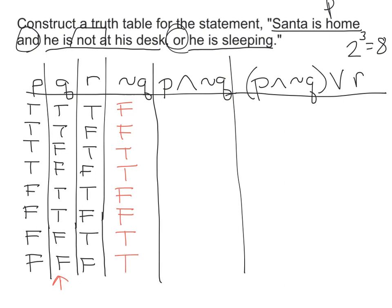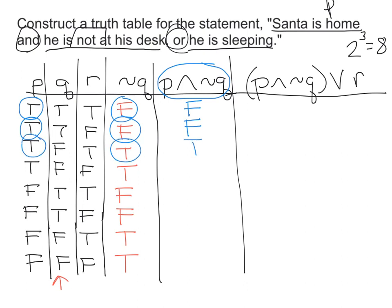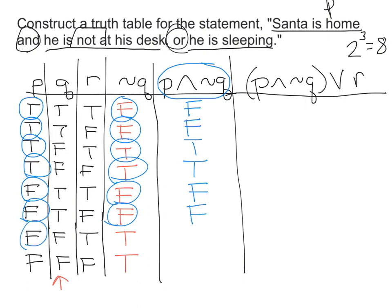Then I need to do the conjunction P and not Q. Going row by row: true and false is false; true and false is false; true and true is true; true and true is true; false and false is false; false and false is false; false and true is false; false and true is false. Wait — correcting: the results are false, false, true, true, false, false, false, false.